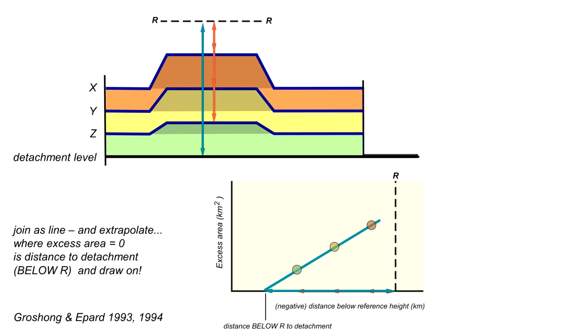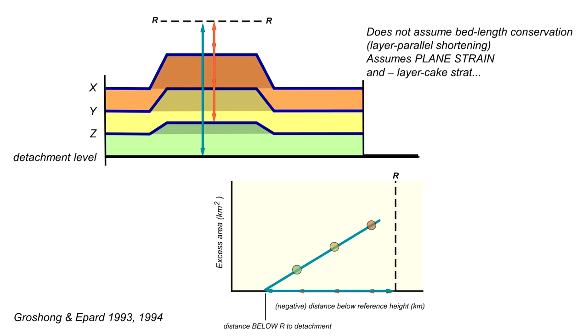This is the Groshon and Hepat method. It's really useful. We do not have to assume bed length conservation, so we can use this method generally when rocks have experienced layer parallel shortening. The method, of course, assumes plane strain, that all the action's happening in the plane of the cross section. And in this particular demonstration, that the stratigraphy started off as parallel bedded, in other words layer cake, before deformation. There's a fundamental part to this method, which is being able to define the excess area. And that, in turn, is critically dependent upon the choice of regional.